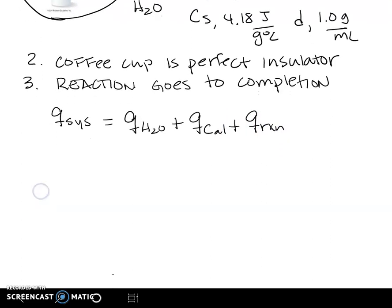We are also going to make the assumption that our Q of our system is going to equal zero. We're assuming no heat is going to be exchanged with our surroundings. I'm going to rearrange this equation, so Q reaction equals minus the sum of our heat of our water plus our heat of our calorimeter.